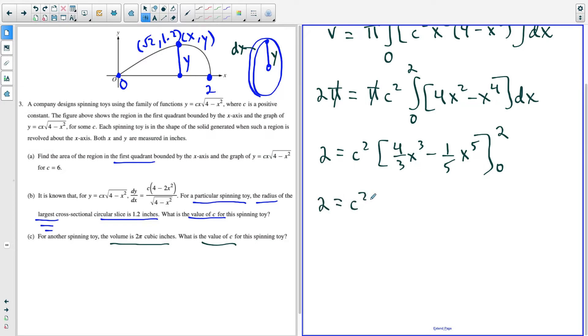So now we just go forward with this here, and it's going to be two is equal to c squared. And we're going to finish using the fundamental theorem of calculus here. So now we just have to plug in. So first, we're going to have four thirds times two to the third power is eight, minus one fifth times two to the fifth power is 32. And then conveniently, we get to plug in zero, so that simplifies nicely.